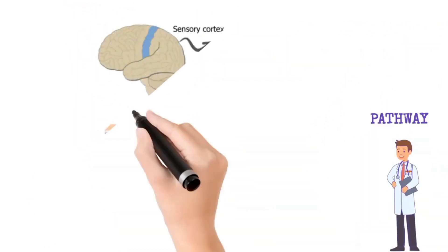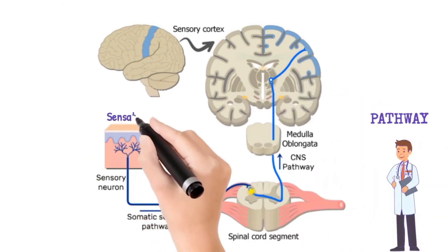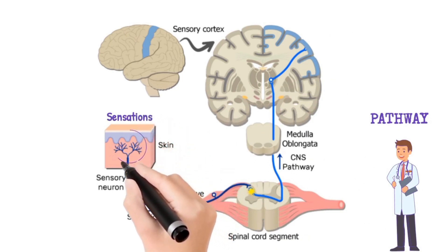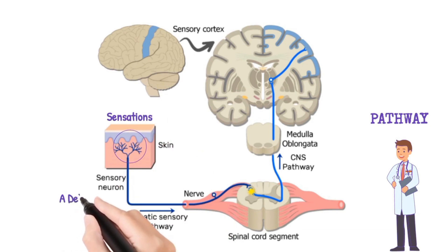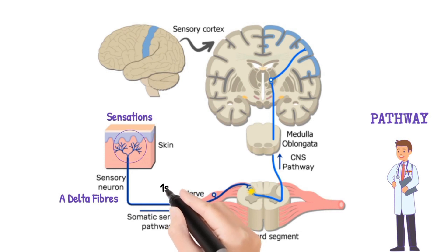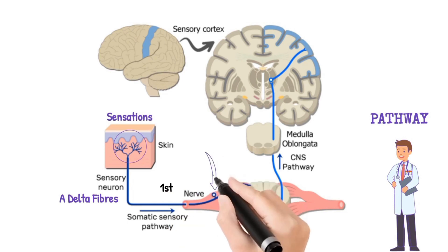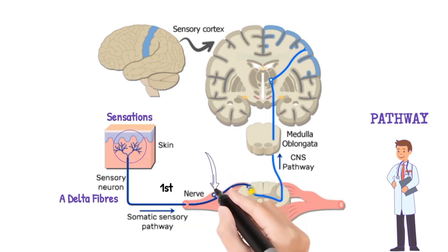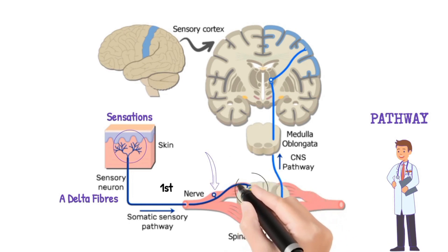Here we will discuss the pathway of the lateral spinothalamic tract in detail. The sensations of pain and temperature are detected by free nerve endings present in the skin. These sensations are then carried by type A-delta fibers, which are fast myelinated fibers that transmit impulses by saltatory conduction at a much faster rate. These fibers are first order neurons, which pass through the dorsal root. They are pseudounipolar neurons with their cell bodies in the dorsal root ganglion. These first order neurons synapse at the substantia gelatinosa, which is part of the gray matter of the dorsal horn of the spinal cord.